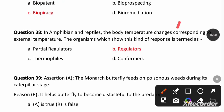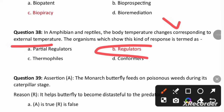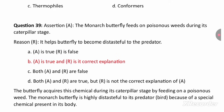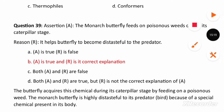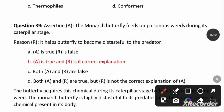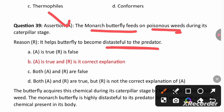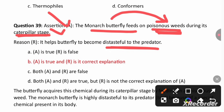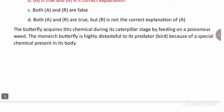Amphibians and reptiles have body temperatures that change corresponding to the external temperature — they are conformers, not regulators. In the assertion-reason question: Assertion A — the monarch butterfly feeds on poisonous weeds during its caterpillar stage. This assertion is correct. The reason is that it helps the butterfly become distasteful to predators. Both A and R are true, and R is the correct explanation.